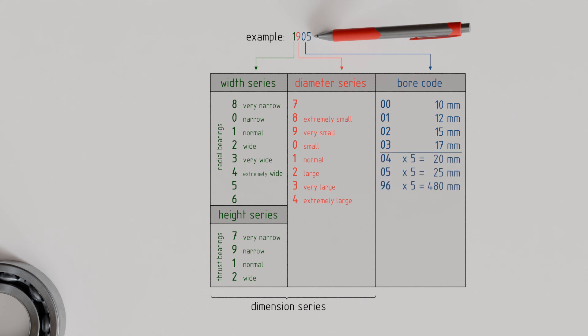In our case, the bore code is 05. When multiplied by the factor 5, the actual bore diameter of 25 mm results. The factor 5 was chosen because many shaft diameters are standardized in 5 mm increments, so no decimal values arise when specifying the bore code.